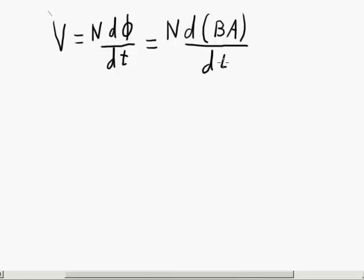What you can see from this equation is if you have a changing magnetic field, you'll induce a voltage, or if you have a changing area, you'll induce a voltage, or if you have both.